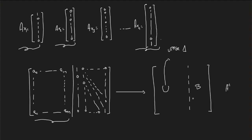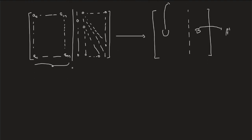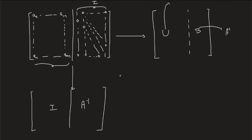There's an easier method: instead of reducing to upper triangular form, we perform row reduction until the left side becomes the identity matrix. By performing elementary row operations such that the matrix on the left is the identity, we get the right-hand matrix to be the inverse of A — as simple as that.